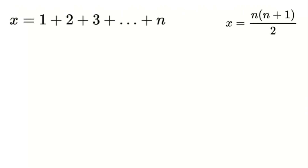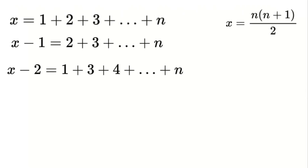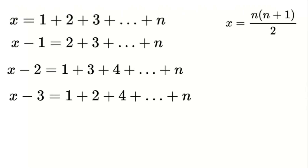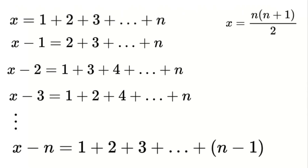To explore this sum, we'll systematically subtract each term from x, one at a time. This gives us the following set of equations: (1) x minus 1 equals 2 plus 3 and so on up to n; (2) x minus 2 equals 1 plus 3 plus 4 and so on up to n; (3) x minus 3 equals 1 plus 2 plus 4 and so on up to n — and so on, until we have n equations in total.